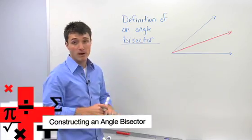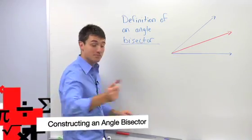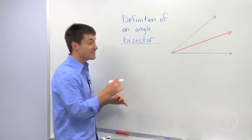The key points to an angle bisector is that it does a couple things.